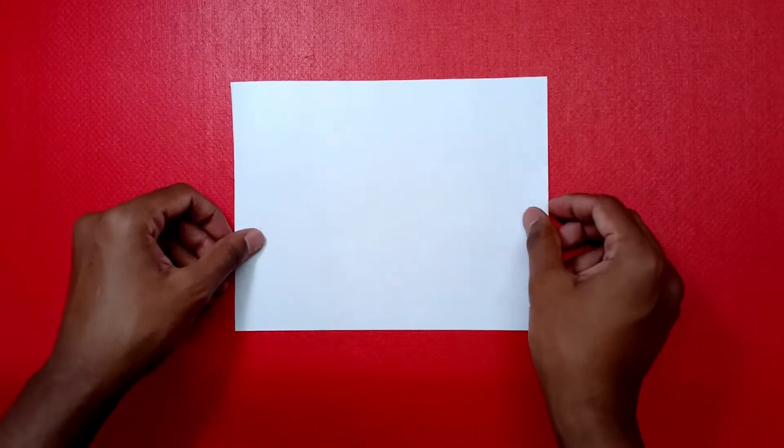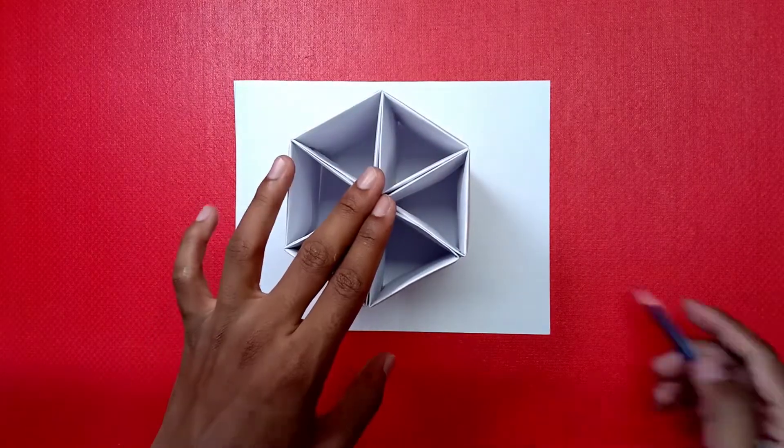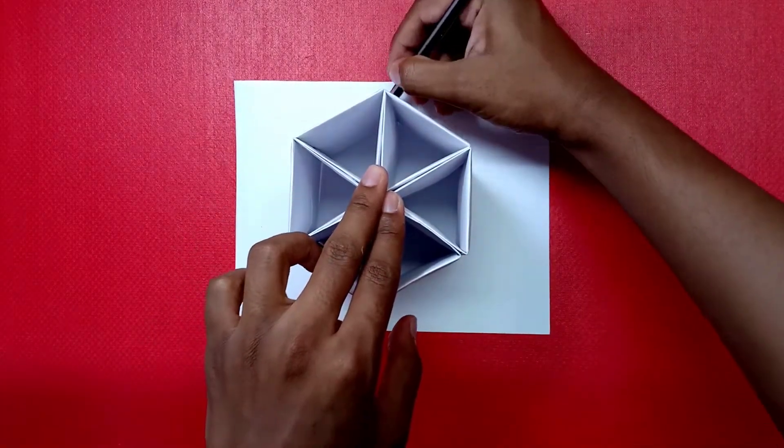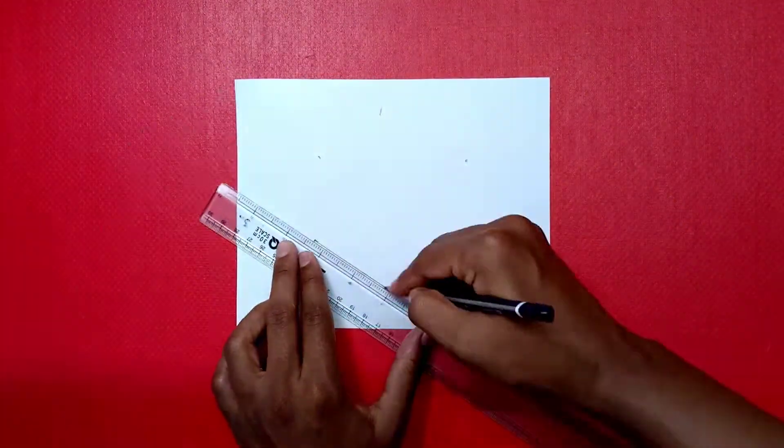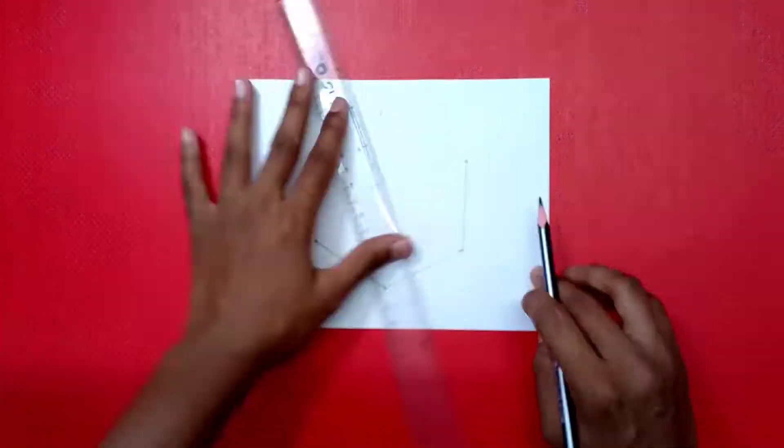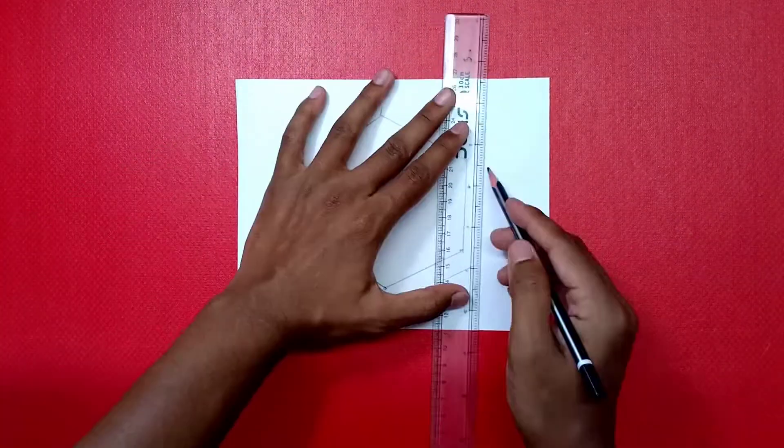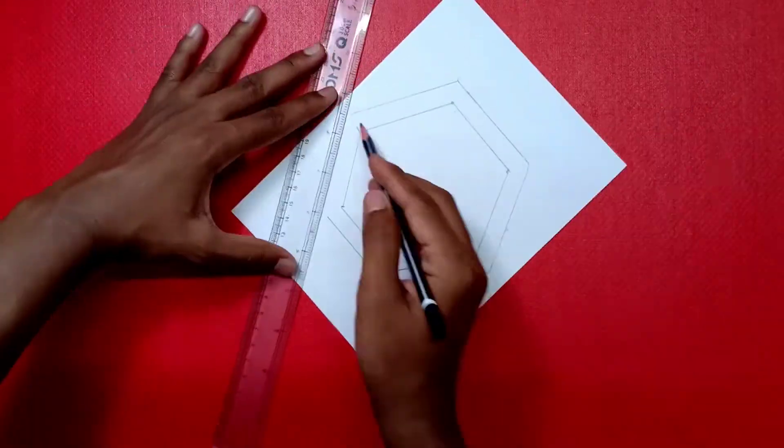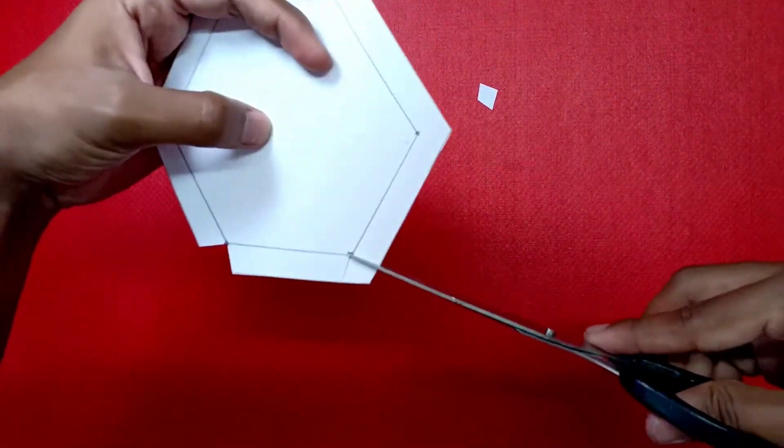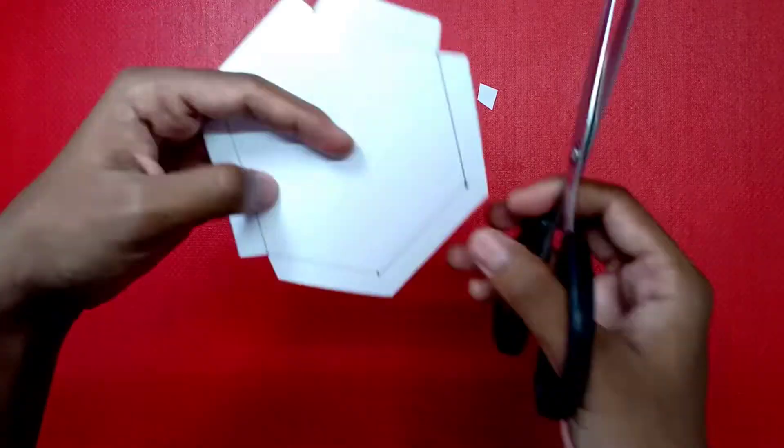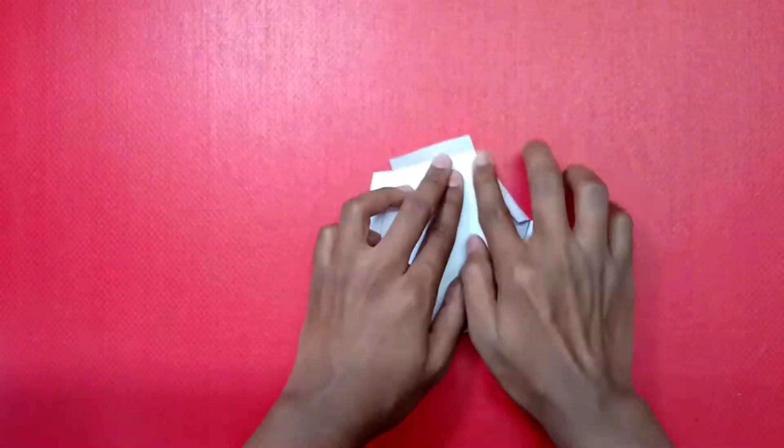To make the base for the pen stand, you will need another sheet of paper. Place the pen stand over it and mark the corners. And match the markings using a scale. You will get an hexagon. Now draw lines parallel to the hexagon on all the sides. Cut that out. Also cut the corners a little like this. And fold along the flaps.